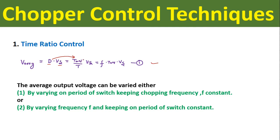Looking at this equation we can conclude that the average output voltage can be varied either by varying the on period of the switch Ton, keeping the frequency constant, or we can vary the average output voltage by varying the frequency and keeping Ton constant. When we keep the frequency constant and vary Ton, this method is called pulse width modulation control or constant frequency system. When we vary the frequency keeping Ton constant, it is called frequency modulation scheme or variable frequency system.